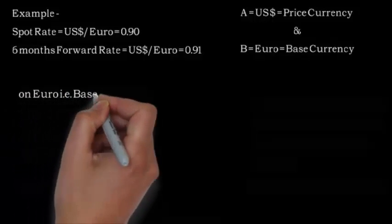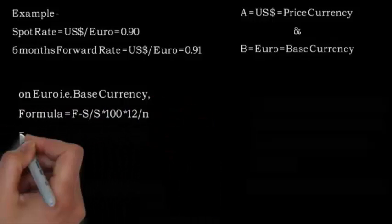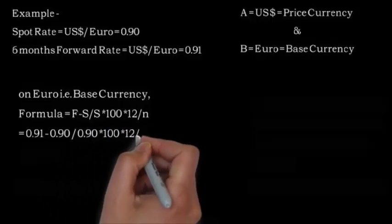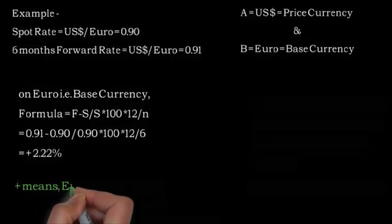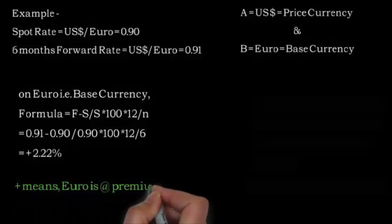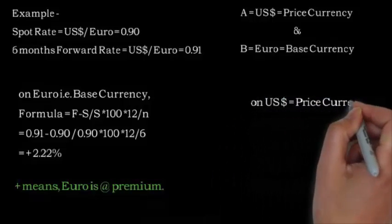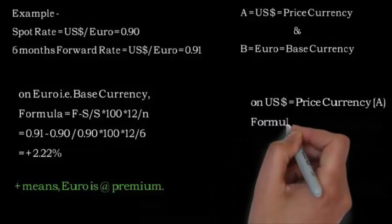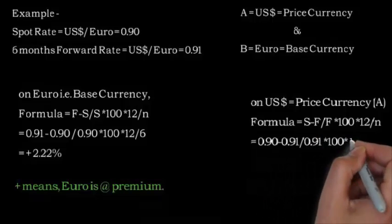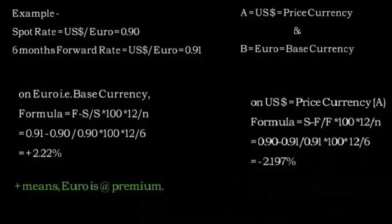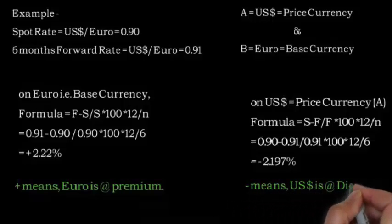Calculating first on the base currency using the formula (F − S) / S, the result is positive 2.2%, meaning the Euro is at a premium of 2.2% per annum. When calculated on the dollar — the price currency — it is at a discount of 2.197%, since the negative result indicates a discount.